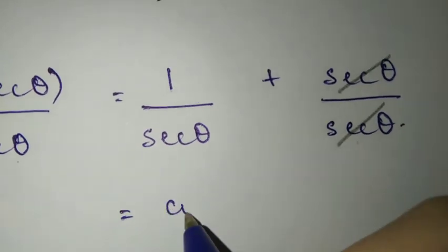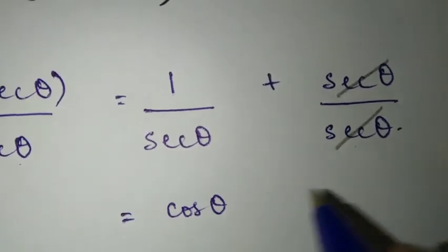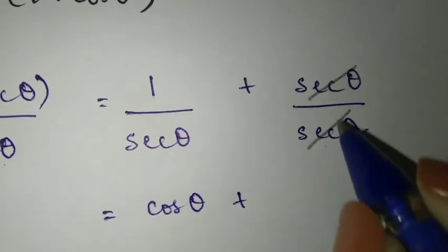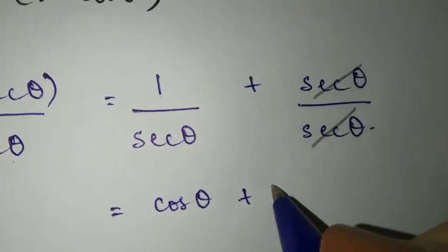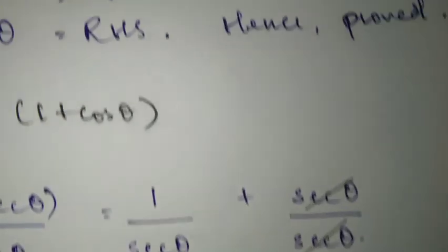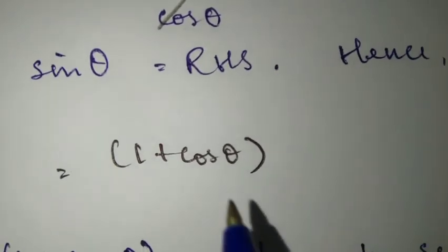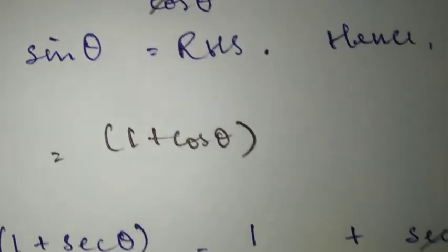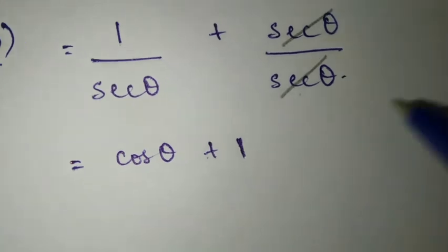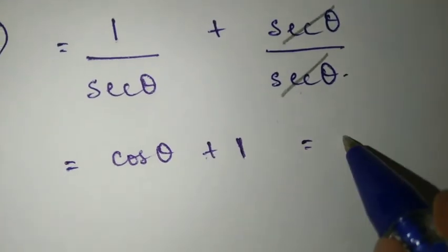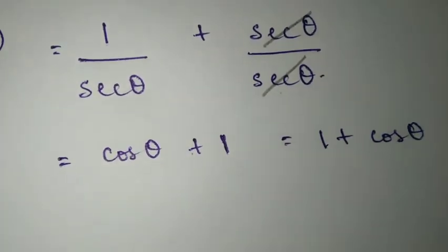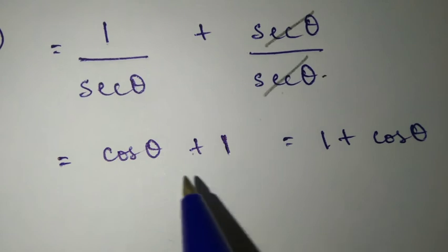So over here you have cos theta plus 1 — so the result becomes 1 plus cos theta. Now, from the question, 1 plus cos theta and 1 plus cos theta — they are the same thing.